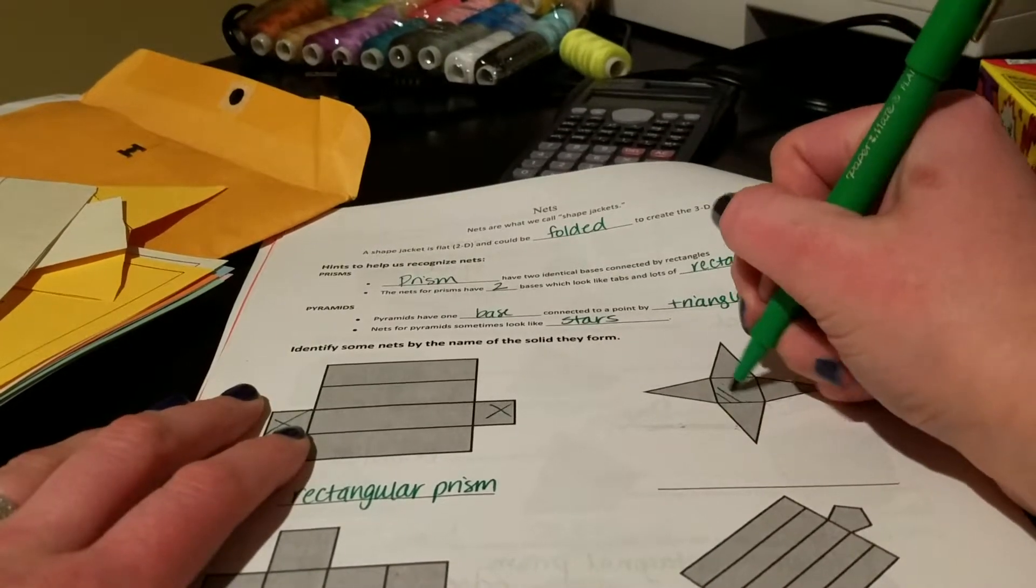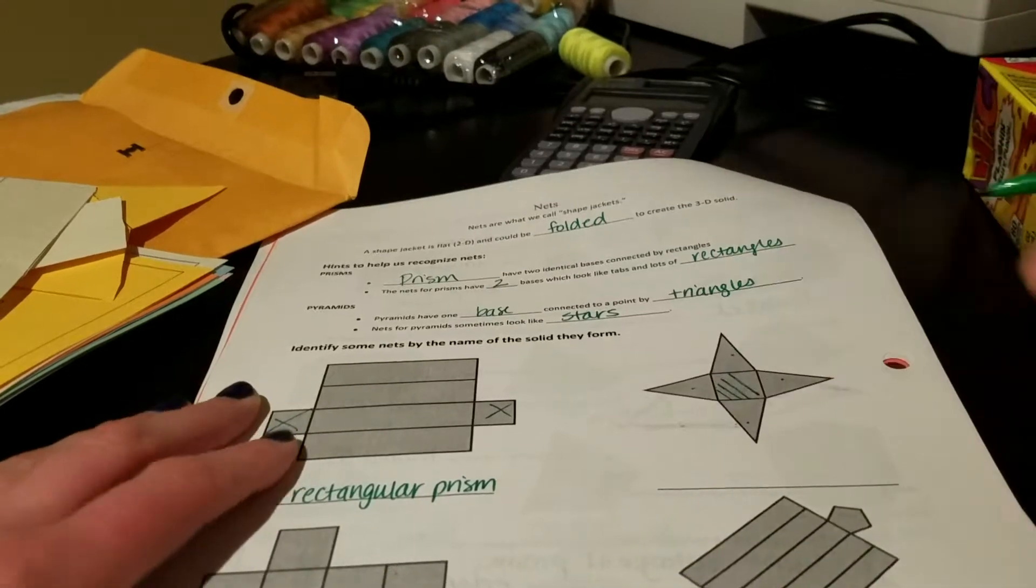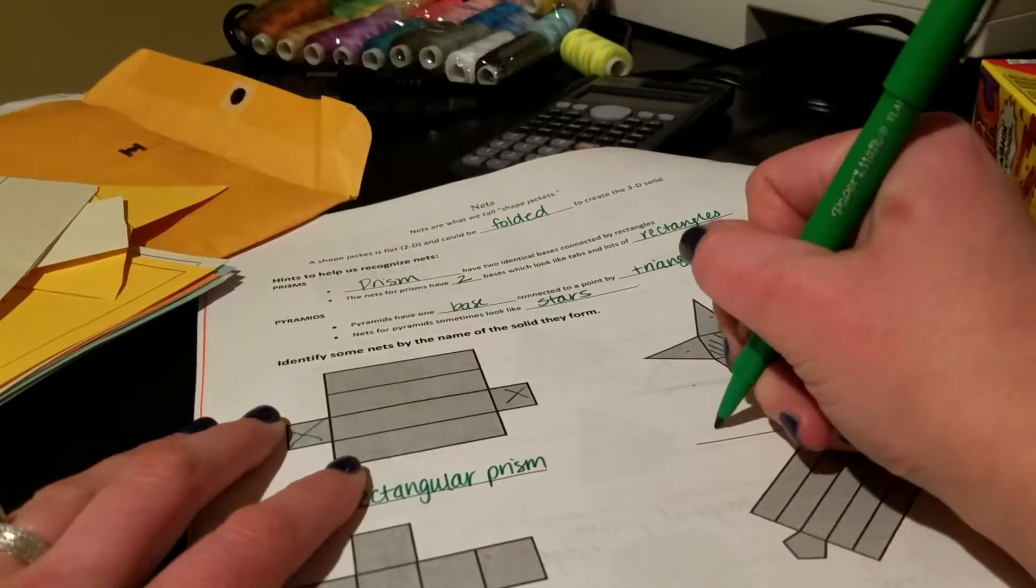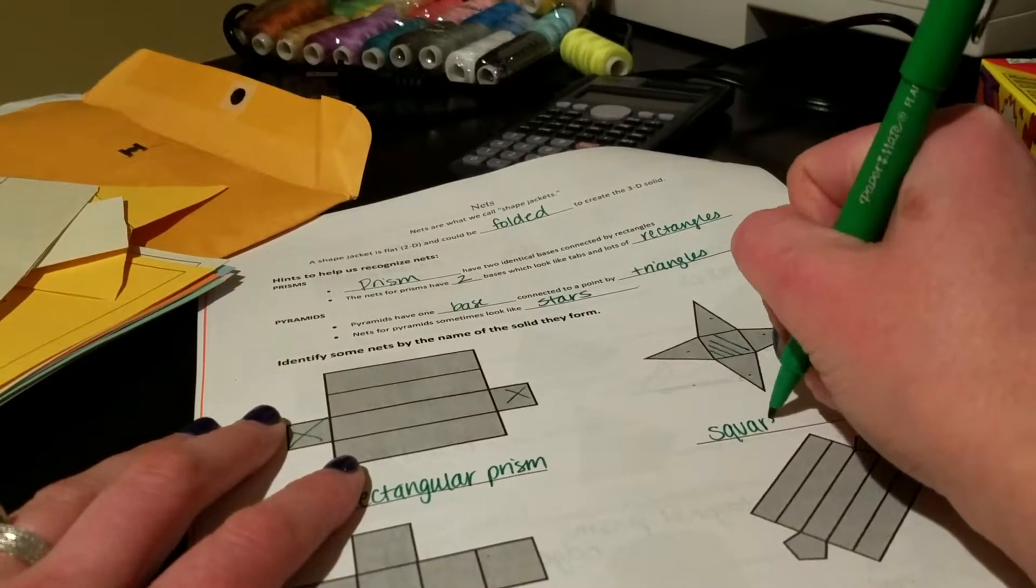This one looks like a star. Here's my base. There's all my triangles that fold up. So it's a pyramid, and it's a square pyramid.